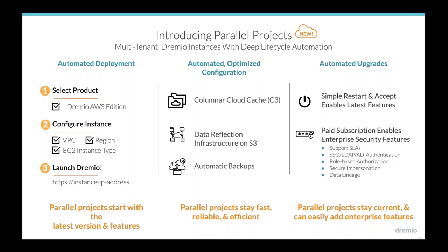That manifests through another feature we call Parallel Projects — independent instances that contain all of their resources, with full isolation, great for compliance. Each project can have as many different engines as you want. Different teams can have their own thing; different business units can operate independently. We've wrapped a lot of automation around deployment — you can go through our website into the Marketplace and easily fire Dremio up and get your first project going.